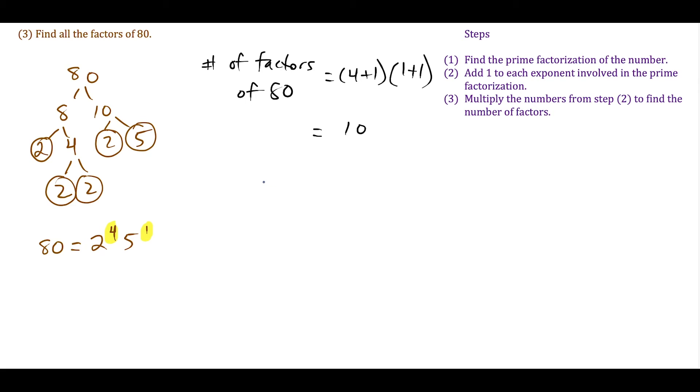Now we list them. We start with 1 times 80, then 2 times 40. 3 doesn't go into 80 because 8 plus 0 is 8, which isn't divisible by 3. We have 4 times 20. We try 5. If you're stumped on 5 times blank equals 80, notice 5 to the first times 2 to the fourth equals 80. So 80 equals 5 times 2 to the fourth power, which is 16. That's another way of using prime factorization to find the missing pair of factors.